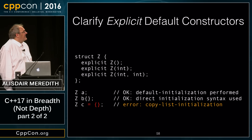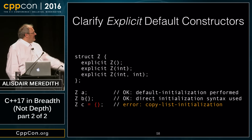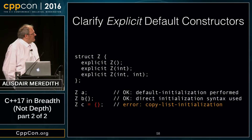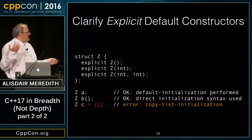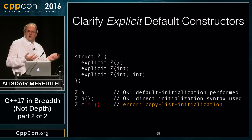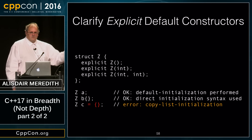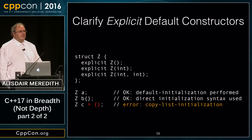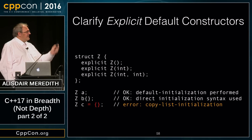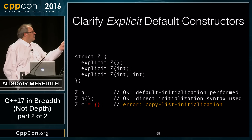We're clarifying explicit default constructors. The case `Z z = {}` — is equal to empty braces — was ambiguous in the standard. Having gone through the alternatives, making that ill-formed is most consistent with how explicit constructors work elsewhere in the language. This simplifies a large number of library issues that were hanging on this core feature.